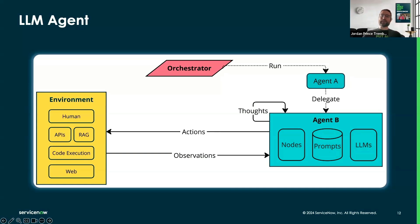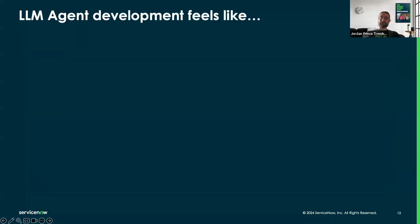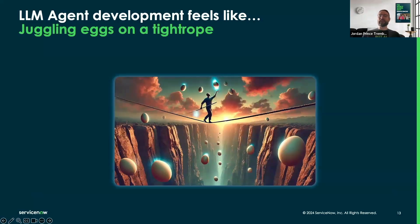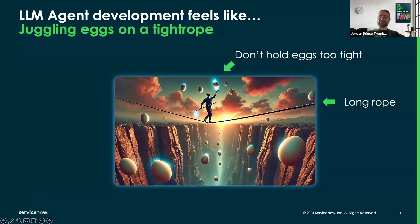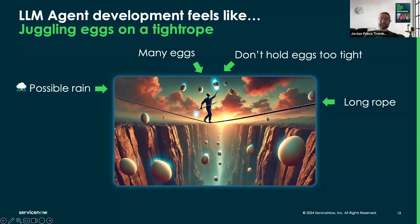Finally, there's an orchestrator that makes your entire system run. Using this setup to make LLM agent demos is getting easier and easier. But delivering it to the real world in the form of a product that customers will rely on feels like juggling eggs on a tightrope. The rope is long, like your agent that needs to do multiple steps following a long-term plan. You need to be careful with the eggs, just like your prompts that can behave differently with only one character difference. There are many eggs, like the number of agents or tools you want to leverage. Even if you become the best at your craft, there is still the possibility of the rain, like the environment that constantly changes. And the wind is always changing, like the probabilistic nature of LLMs that drives your agent.